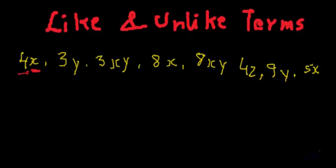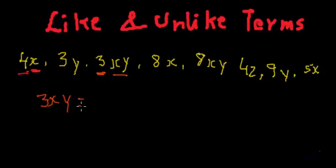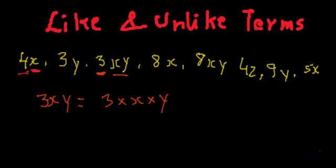Similarly, if we see other terms like 3xy, here 3 is a constant and xy is variable. So what does 3xy actually mean? It is 3 multiplied by x multiplied by y. We have learned this in earlier videos. So let's go ahead with like terms and unlike terms.